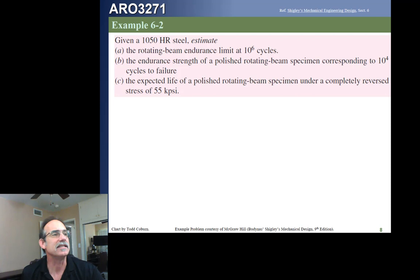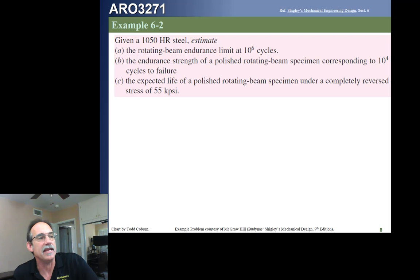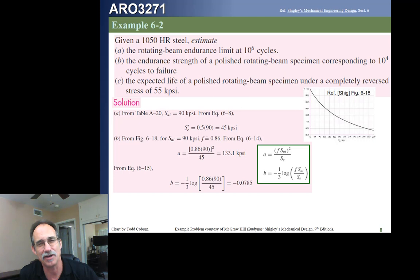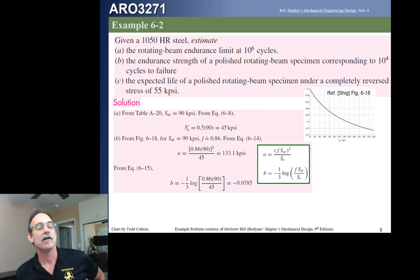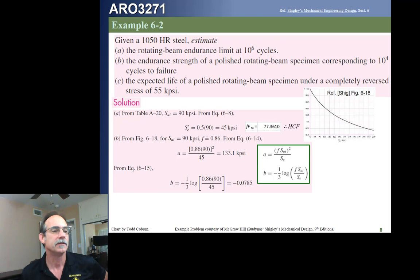Here's an example using a 1050 hot-rolled steel with properties from Shigley. We want to find the endurance limit at 10^6 cycles, the endurance strength of the polished sample for 10^4 cycles, and the expected life at a fully reversed stress of 55 KSI. First, get the strength fraction by plugging FTU into the polynomial. Then estimate the pristine endurance limit as 50% of FTU — that's 45 KSI, which is less than 100 KSI so it's valid. Calculate coefficients a and b, then plug them in to find the fatigue strength at 10^4 cycles, or plug in 55 KSI to calculate the number of cycles.